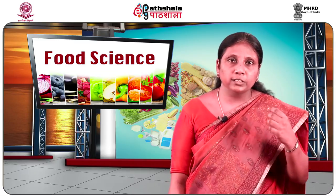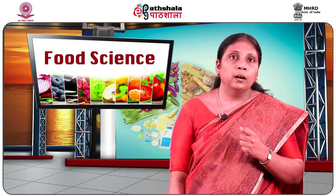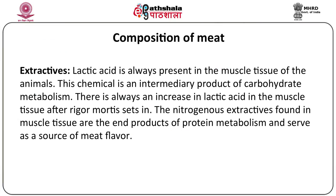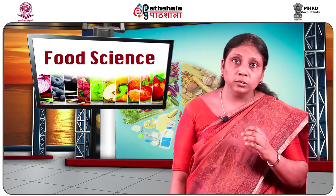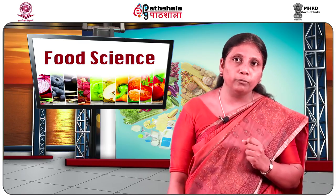Apart from carbohydrates, fat and pigments, meat also has certain extractives that give flavor to the meat. Lactic acid is one such extractive always present in the muscle tissue of animals. Lactic acid is an intermediate product obtained by carbohydrate metabolism, and there is always an increase in lactic acid in the muscle tissue after rigor mortis has set in. Rigor mortis is a specific post-mortem change that takes place in meat after the animal is slaughtered. Apart from lactic acid, there are also nitrogenous extractives which are end products of protein metabolism and also contribute to the flavor of meat.